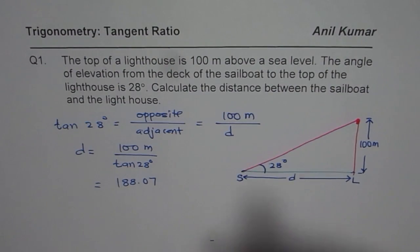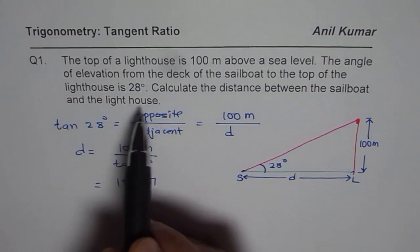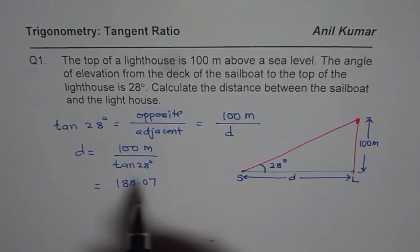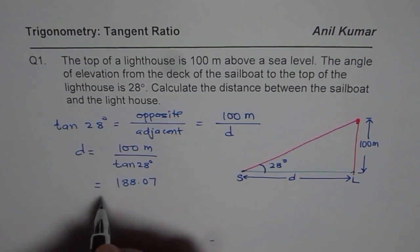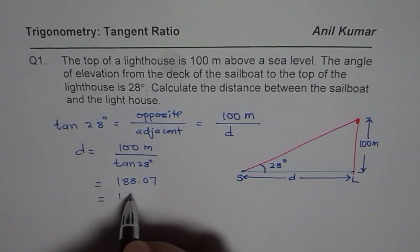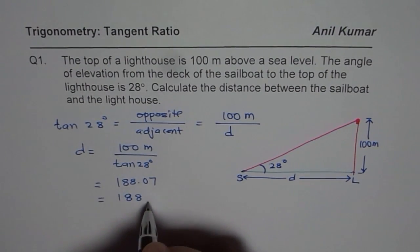Now since we have not mentioned calculate the distance to the accuracy, and since 100 meters is written as 100, we will round this to a whole number. And we say the distance between the sailboat and the lighthouse is 188 meters.